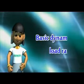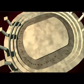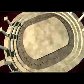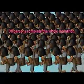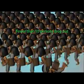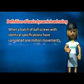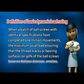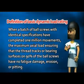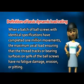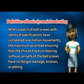Basic dynamic load rating — what is it? Suppose 100 runners are carrying heavy objects in a marathon and they run 1 million laps around the track at the same speed. At least 90 athletes must complete the full race and fewer than 10 persons can drop out. The weight that everyone is carrying is termed the basic dynamic load rating. It is defined as the maximum axial load ensuring that, after a batch of identical ball screws has completed 1 million movements, the thread tracks or bearing surfaces on 90% of the ball screws have no fatigue, damage, erosion, or pitting.